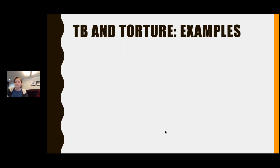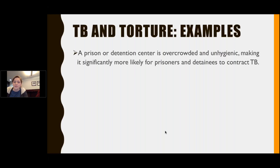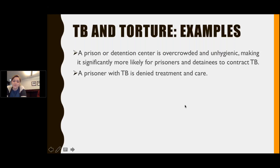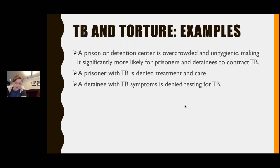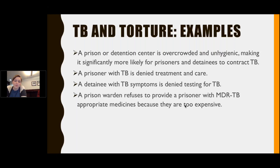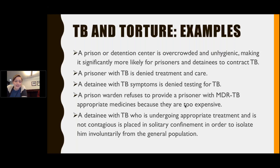Examples of torture involving TB include: a prison or detention center that is overcrowded and unhygienic, making it significantly more likely for prisoners to contract TB; a prisoner with TB being denied treatment and care; a detainee with TB symptoms being denied testing; a prison warden refusing to provide a prisoner with MDR-TB appropriate medicines because they're too expensive; or a detainee with TB undergoing appropriate treatment who is not contagious being placed in solitary confinement involuntarily.